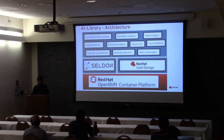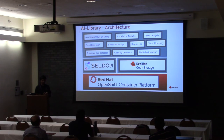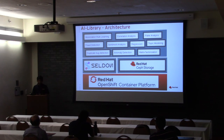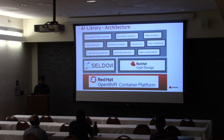Looking at the architecture: once deployed, AI Library sits on top of the container platform — we use OpenShift — and on top of that is Seldon. Seldon is an open-source platform to serve models; anytime you have a model — Python code, Java, anything doing ML — you package it into a container and serve it through a REST API or gRPC. For data storage it's compatible with any S3 backend; here we've used Ceph, but AWS, Minio, or any S3-compatible store will work.